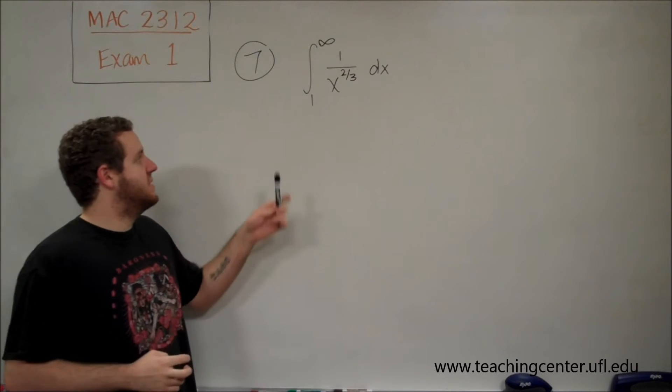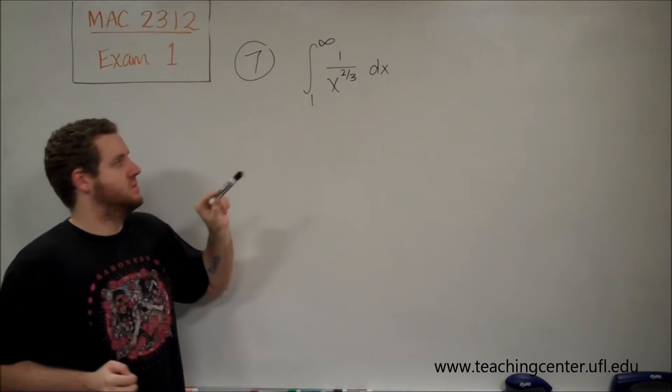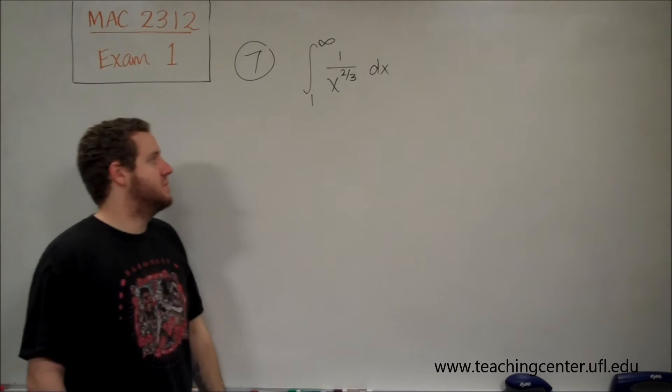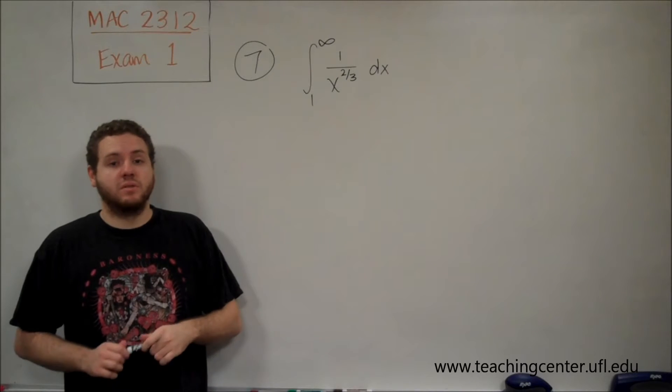For number 7, we want to see if this improper integral—the integral from 1 to infinity of 1 over x to the 2/3 dx—is convergent or divergent.